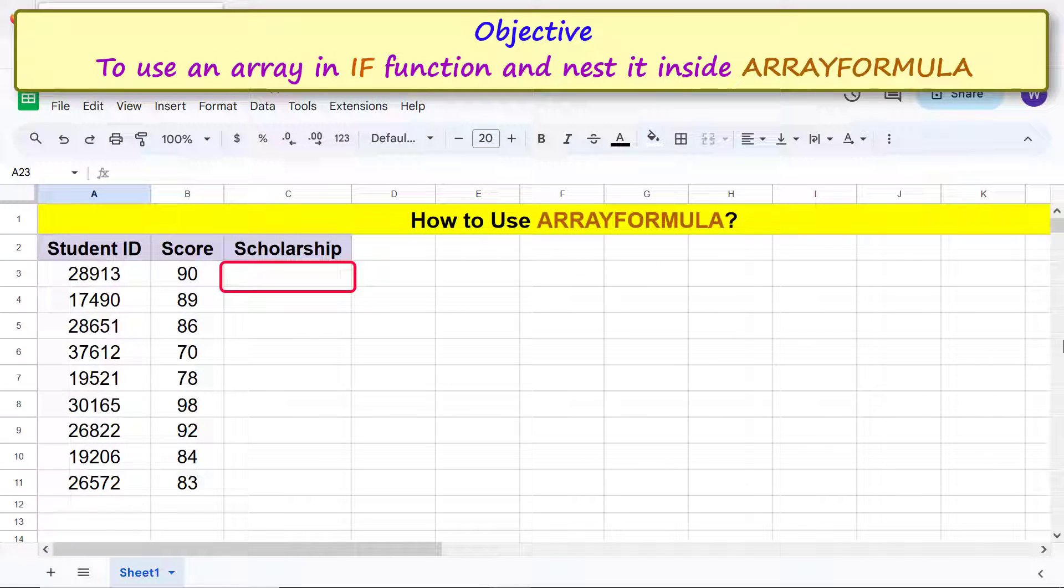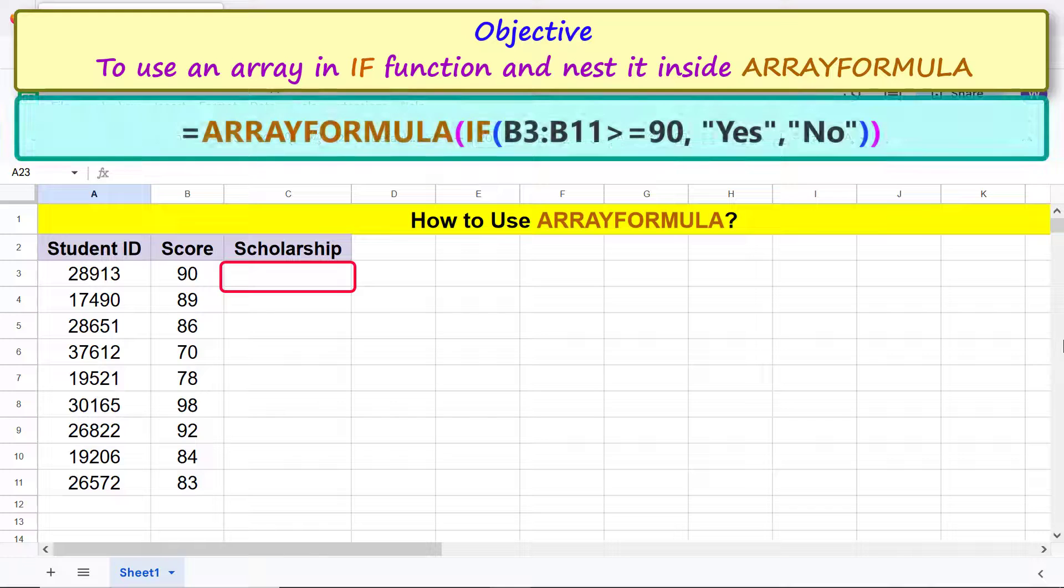Now let me nest IF inside the array formula and use the same array as before as the argument of IF. Here is the IF array combo function formula. First, type the equal to symbol, ARR, and select array formula.